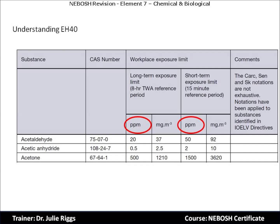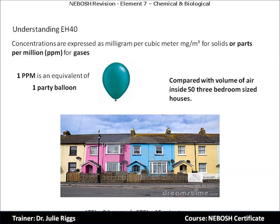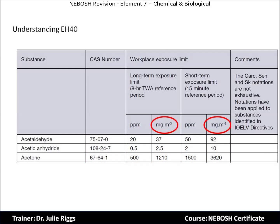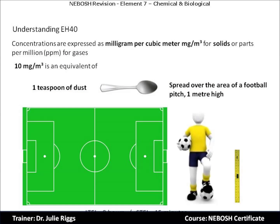At the moment these figures may seem difficult to comprehend, so let's look at visualising these measurements. For example, one part per million of gas means that one unit of the gas is present for every one million units of air. To help picture this scale: if we took one party balloon as a measurement to represent one part per million, it is equivalent to the volume of air inside fifty three-bedroom-sized houses. For milligrams per cubic metre, which is for solids, the exposure limit for any kind of dust is 10 milligrams per cubic metre — this is a comparison of one teaspoon of dust spread over a football field that is one metre high. It really does show how little this actually is.